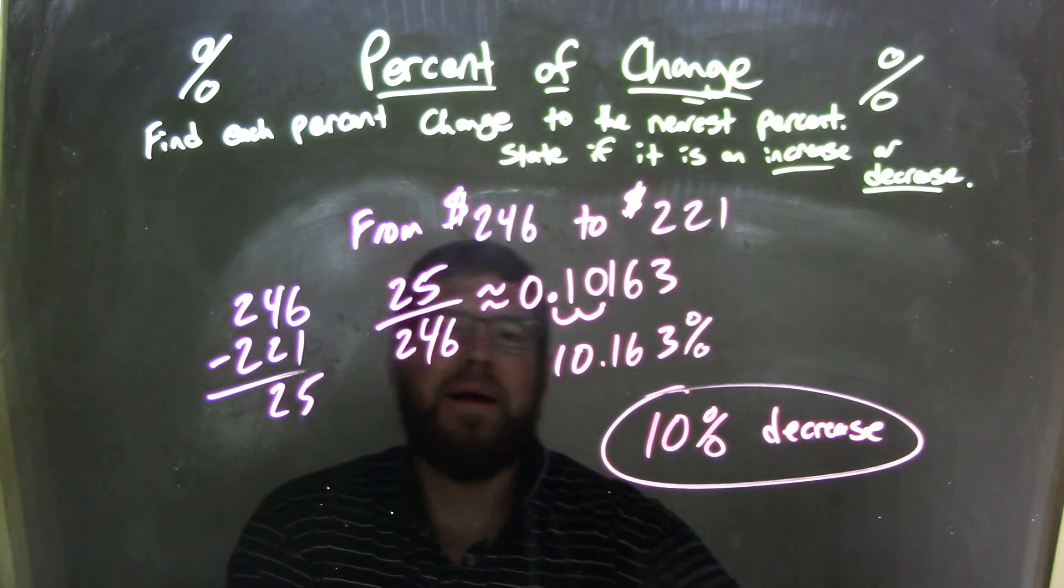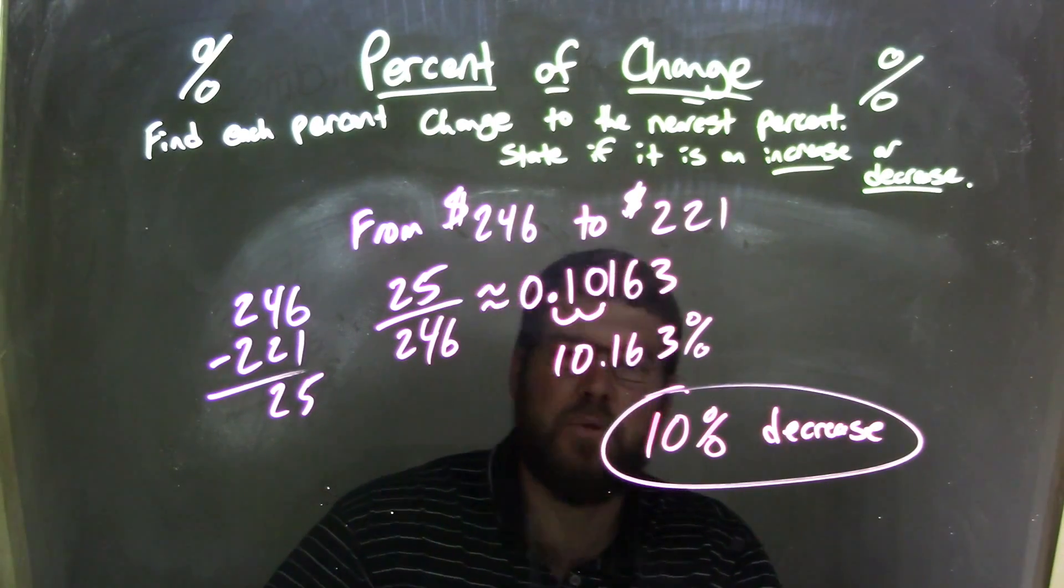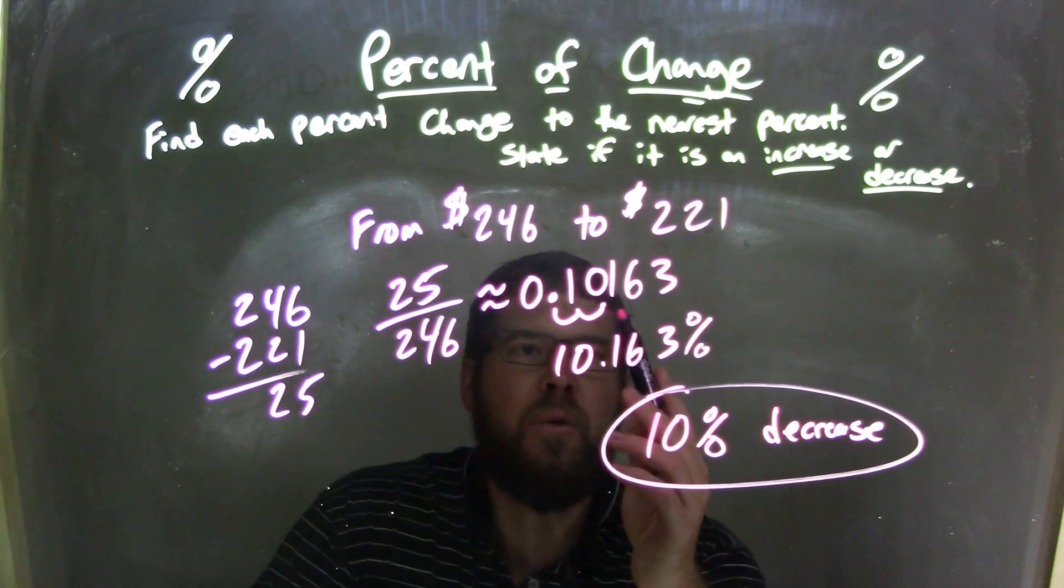We took 25 divided by 246. That came out to be a decimal of 0.10163. So from there,